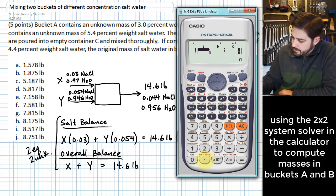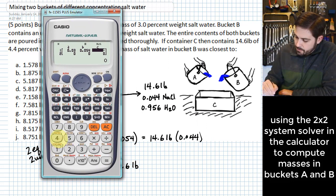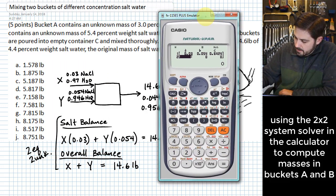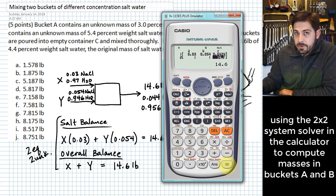So here we've got 0.03. We have 0.054 and then on the other side we have 14.6 times 0.044. Okay for our other equation we just have 1, 1, and 14.6.